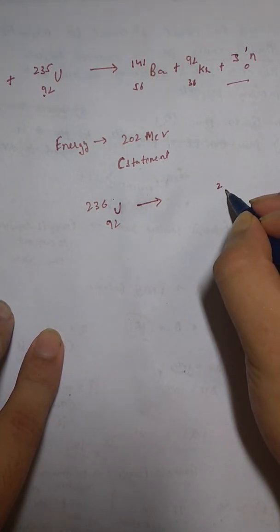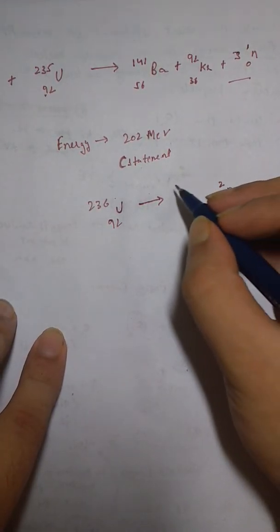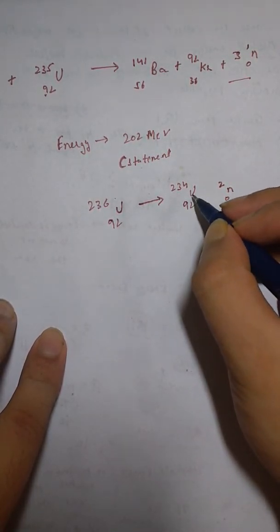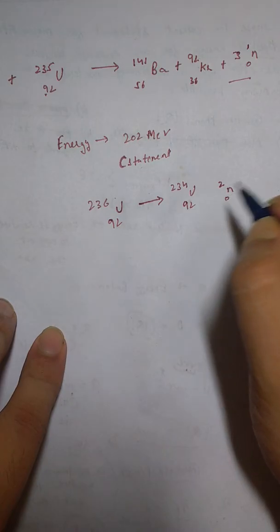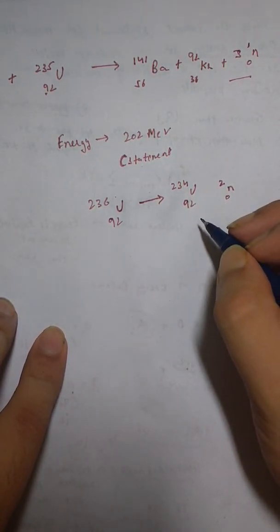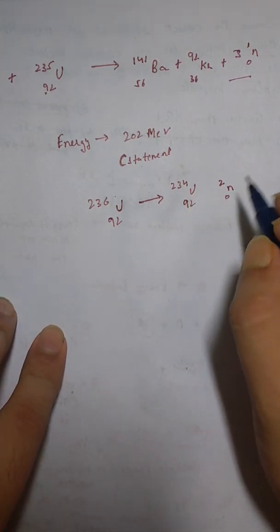We have U-234 left. The daughter nuclei formed in symmetrical fission should be of equal amount, so it should be something like D-46, divide 234 by half which gives you 117, so it should be 2 nuclei of D-117.